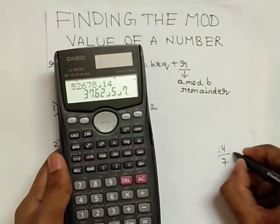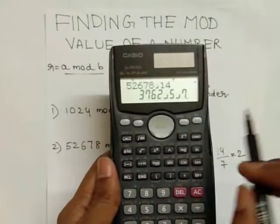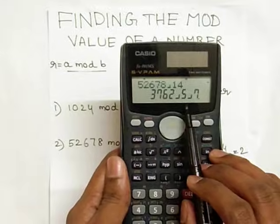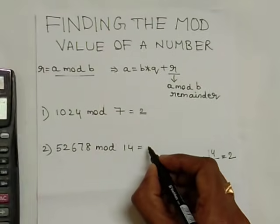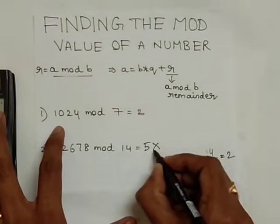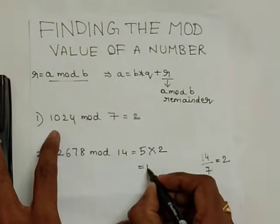14 by 7 equals 2. The value which you see as remainder is 5. So the final result is 5 into 2, which is 10.